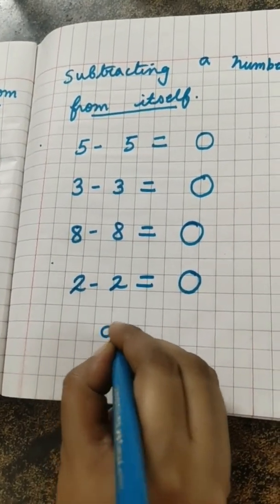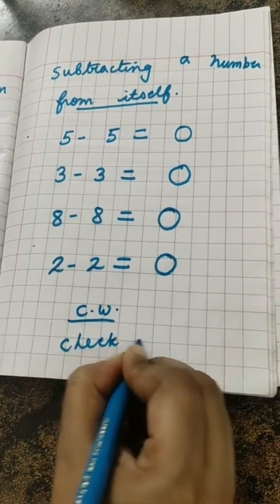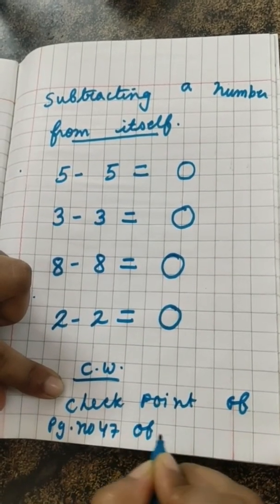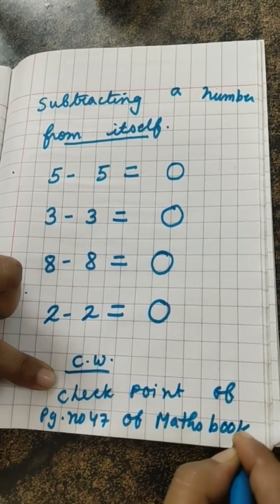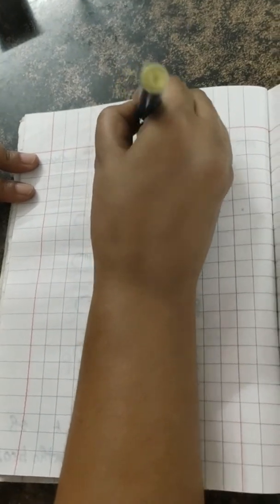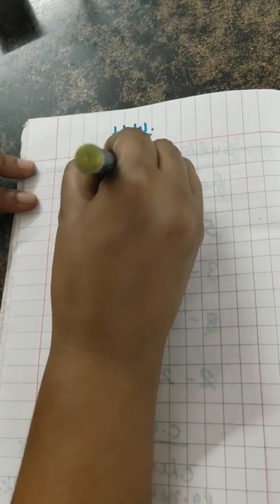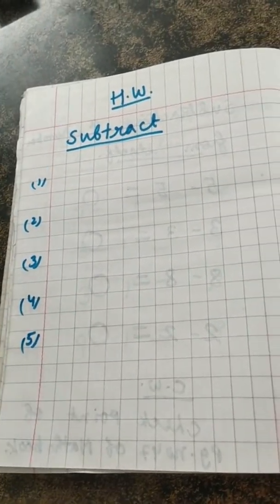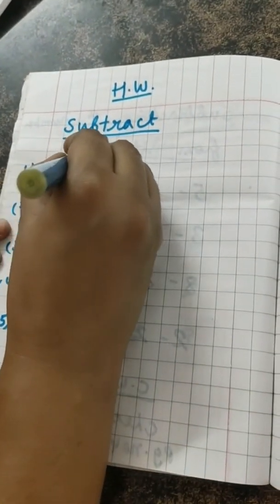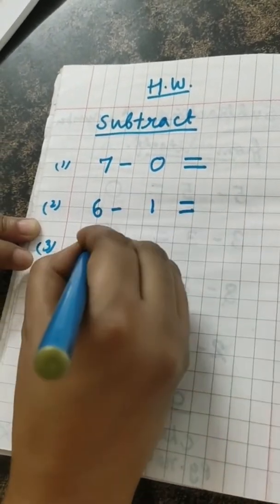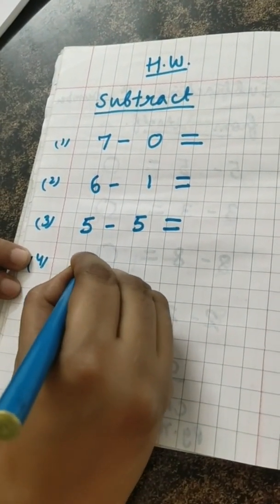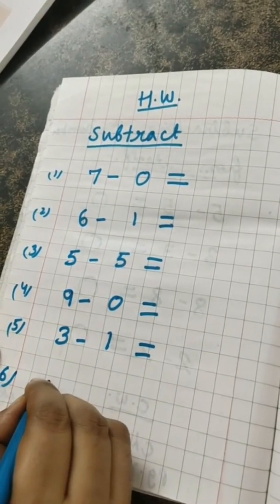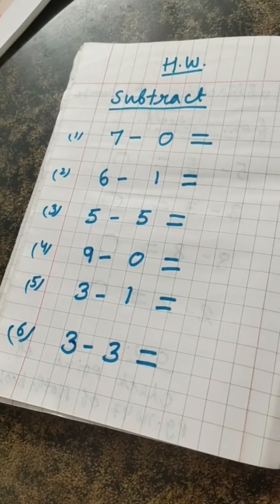And children, your classwork is the checkpoint of page number 47 of maths book. And ma'am will give you some homework, and you all have to do in your maths copy. Subtract. Ma'am is going to mix the questions, and this time I don't want any mistake from any one of you. The first is 7 minus 0, 6 minus 1, 5 minus 5, then 9 minus 0, then 3 minus 1, then question number 6 is 3 minus 3. This is your homework.